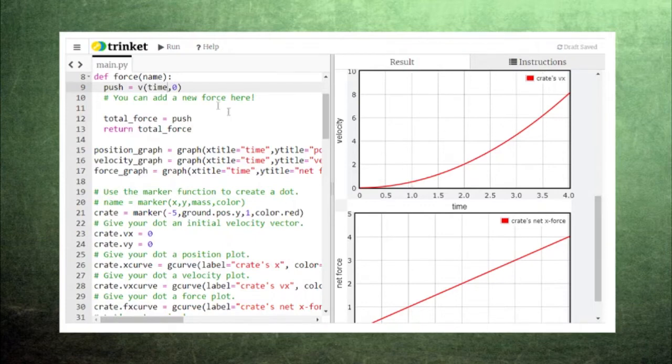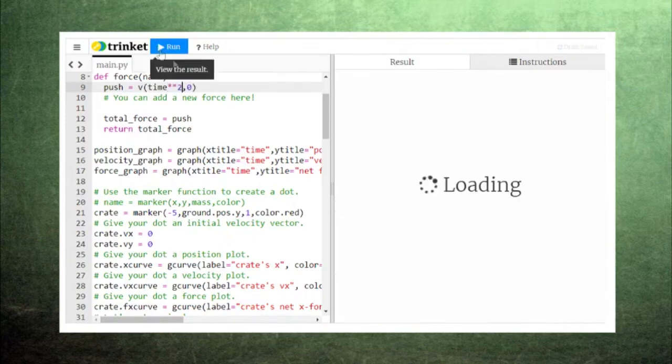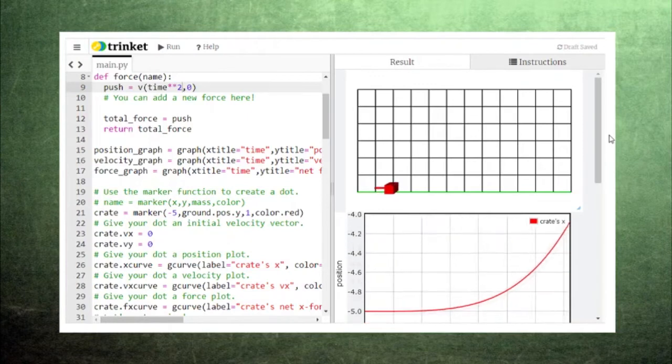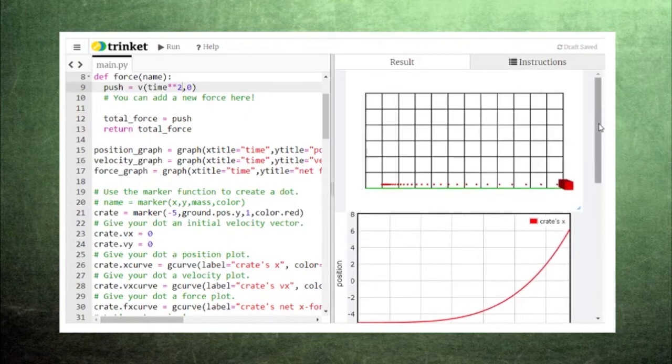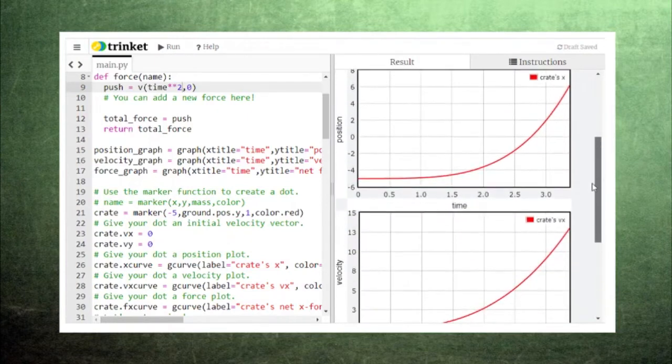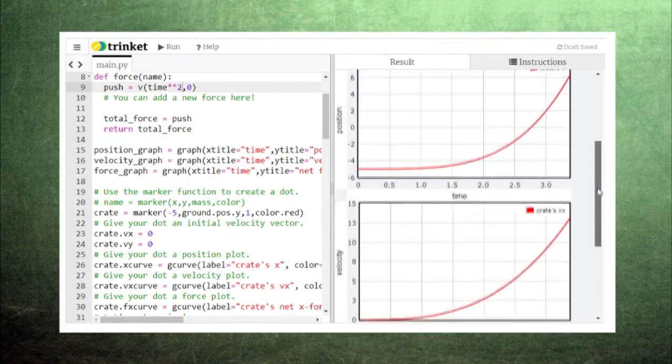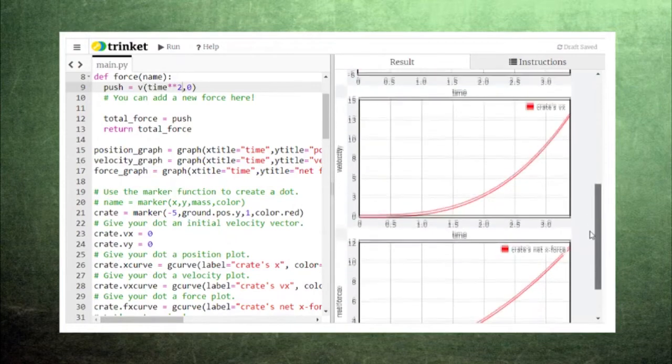The graphs become even sharper if we make the force increase as a function of time squared. Now, the velocity matches a graph of time cubed, while the position matches a graph of time to the fourth power. This increase in power is an interesting trend that shows up in calculus as well.